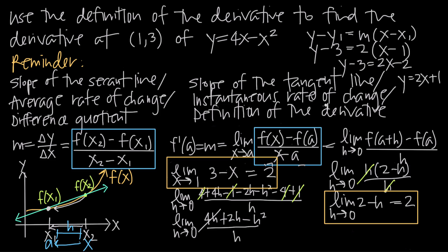That's how we use the definition of the derivative to find the derivative of a function at a point. The derivative at a particular point is also the slope of the tangent line and the instantaneous rate of change at that point. We can then use that derivative as the slope in the point-slope formula to find the equation of the tangent line.